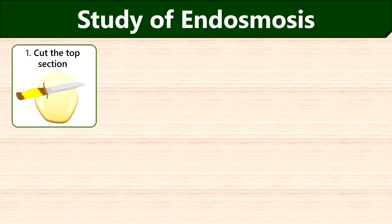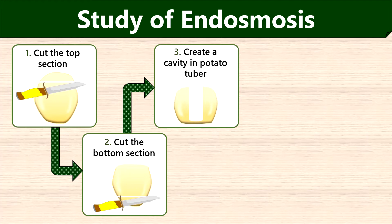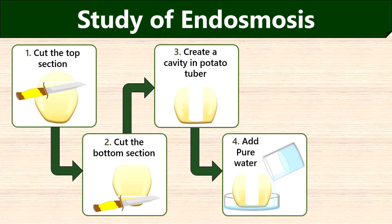Now we will discuss the procedure to study endosmosis using a potato osmometer. First, cut the top section of the potato. Then cut the bottom section so that we can easily place the potato on a petri plate. Then, using a knife, make a cavity from the center of the potato tuber deep into the bottom by leaving some space. Then keep the potato in the petri plate and add pure water to half of the petri plate.